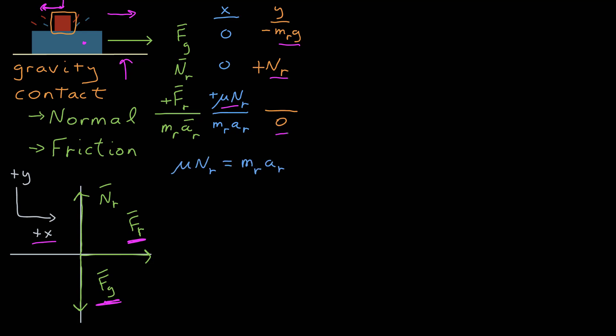So I have two equations, one for the x-axis and one for the y. Since I'm trying to find the change in velocity, I'm trying to find the acceleration of the red block. I think I can use the y equation to solve for the normal force, and then substitute that into the x equation.